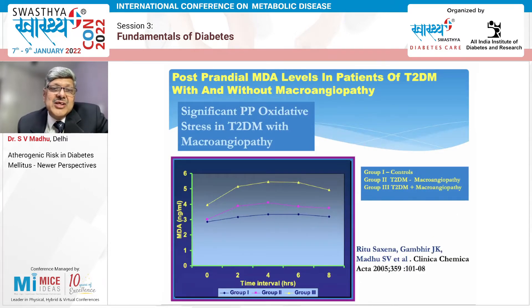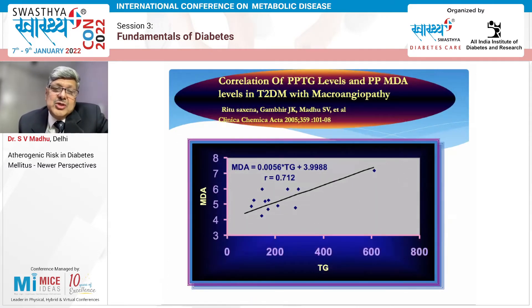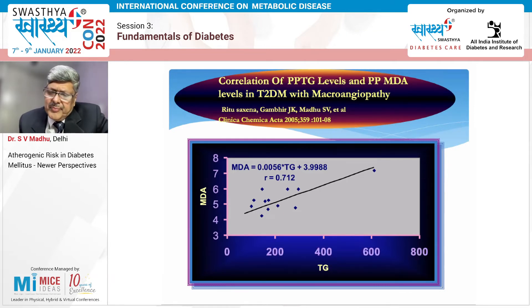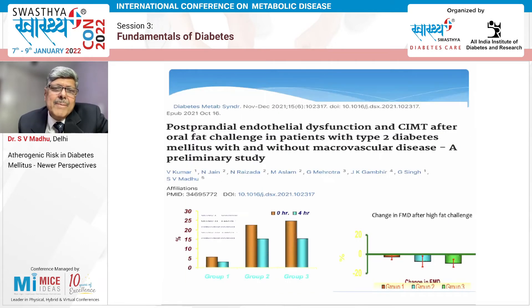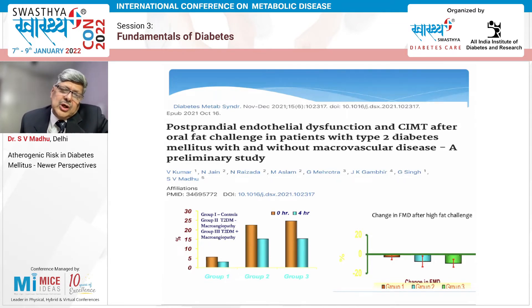More recently we've shown that postprandial hypertriglyceridemia is particularly seen in those with microvascular disease in diabetics, probably setting off a pro-atherogenic environment leading to atherosclerosis and microvascular disease. Following a fat challenge, there is significant postprandial oxidative stress in type 2 diabetic patients with macroangiopathy, closely correlated with postprandial TG levels.